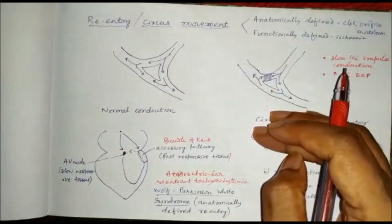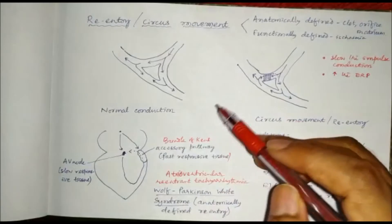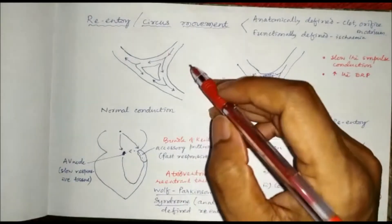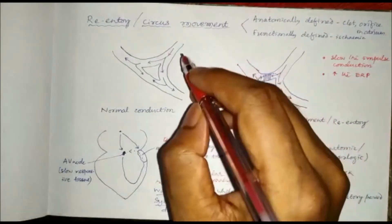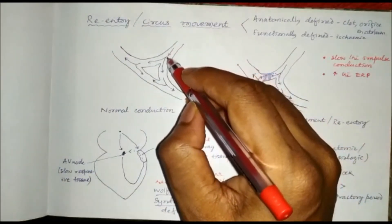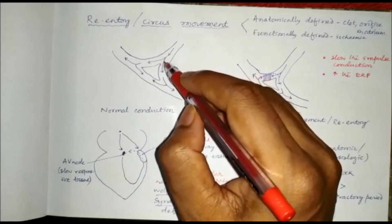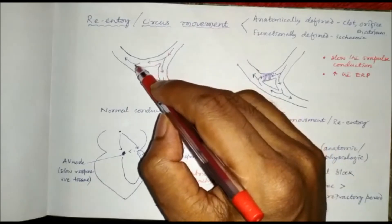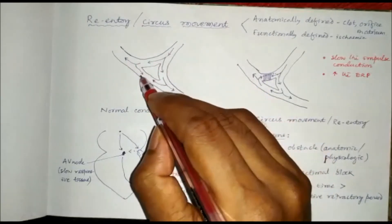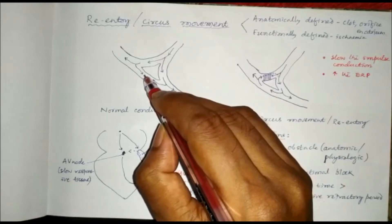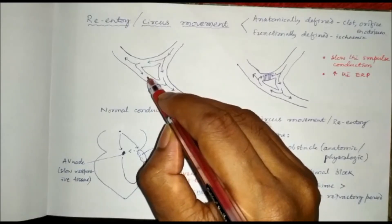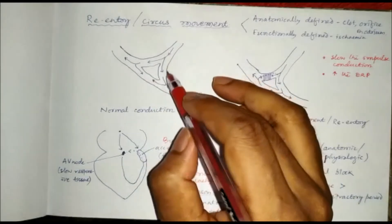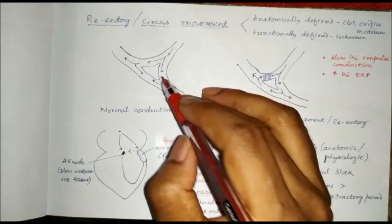Then disturbance in impulse conduction. Let us see how the impulse actually conducts through Purkinje fibres. One impulse comes and bifurcates, then bifurcates again, and the impulses from two opposite directions come in contact with each other and get neutralized. So in normal conduction, every impulse gets neutralized at a certain point.